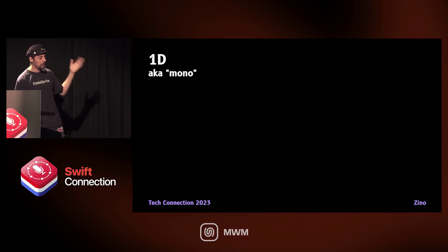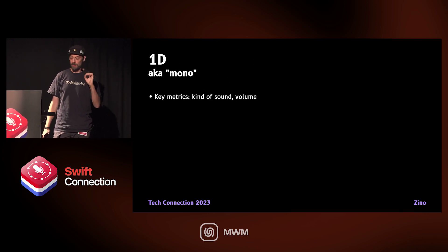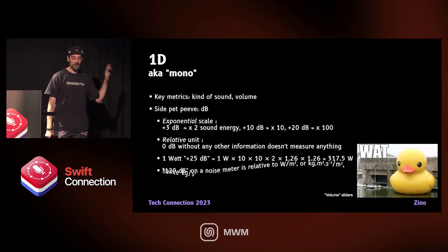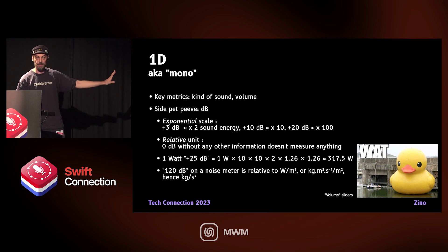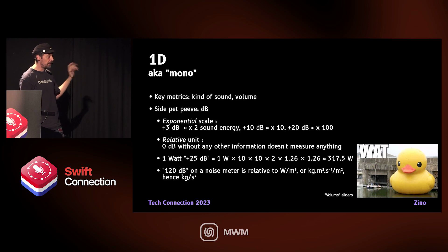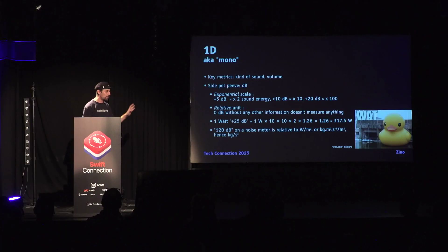Let's start with mono. With mono, you can play with the kind of signal you're playing and the volume. Side pet peeve: volume doesn't mean anything. The way that works is way more complicated — those who know me know that I'm a math head. When you have one watt of power plus 25 dB, it means 300 watts of output. Just remember two things about dB: most people don't know what it is, and it's an exponential scale. If you do plus 3 dB, you actually multiply the power by 2. So it is not as simple as just moving a slider left to right.